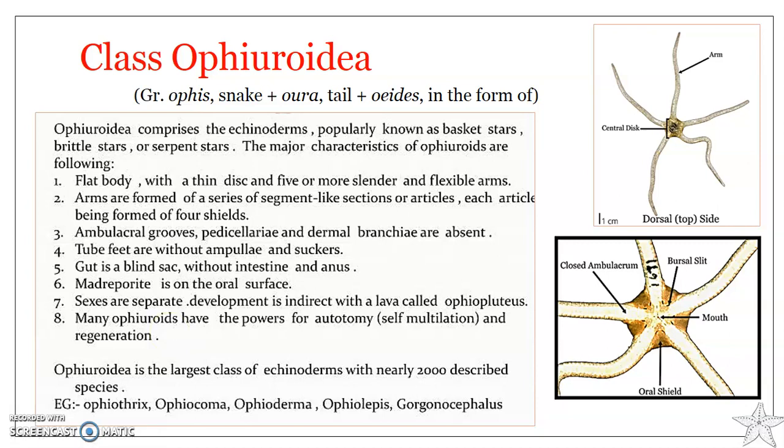Unlike asteroids, the water vascular system in ophiuroids is not used for locomotion. Instead, the skeleton is modified to permit a unique form of grasping and movement. Ophiuroids are predators and scavengers, and they use their arms and tube feet in sweeping motions to collect prey and particulate matter, which are then transferred to the mouth.